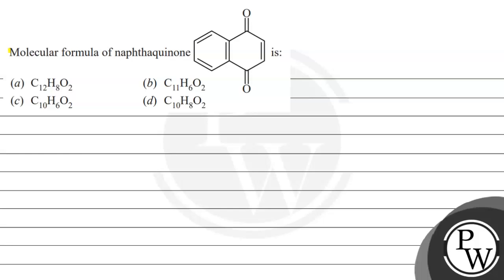Hello, let's read this question. Molecular formula of naphthaquinone, this is the structure given for the same, is, and the following options are given as A, B, C, and D.